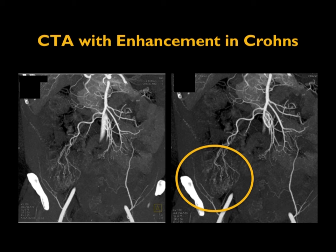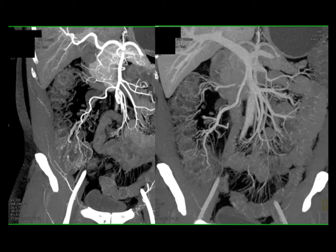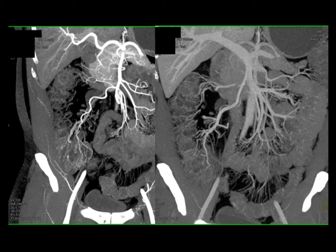Things you look for on CT enterography include mucosal hyperenhancement, wall thickening over 3 millimeters — typically in the 7 to 8 millimeter range — mural stratification (seeing bowel layers), prominent vasa recta (the comb sign), and mesenteric fat stranding. Here we see prominent vessels to the patient's right colon — this hyperemia is very classic for an inflammatory condition, in this case due to Crohn's disease. It's not neovascularity; it's prominent vessels and prominent flow. You can see increased flow in tumors with more neovascularity, but here it's very symmetric — you're thinking of an inflammatory process.